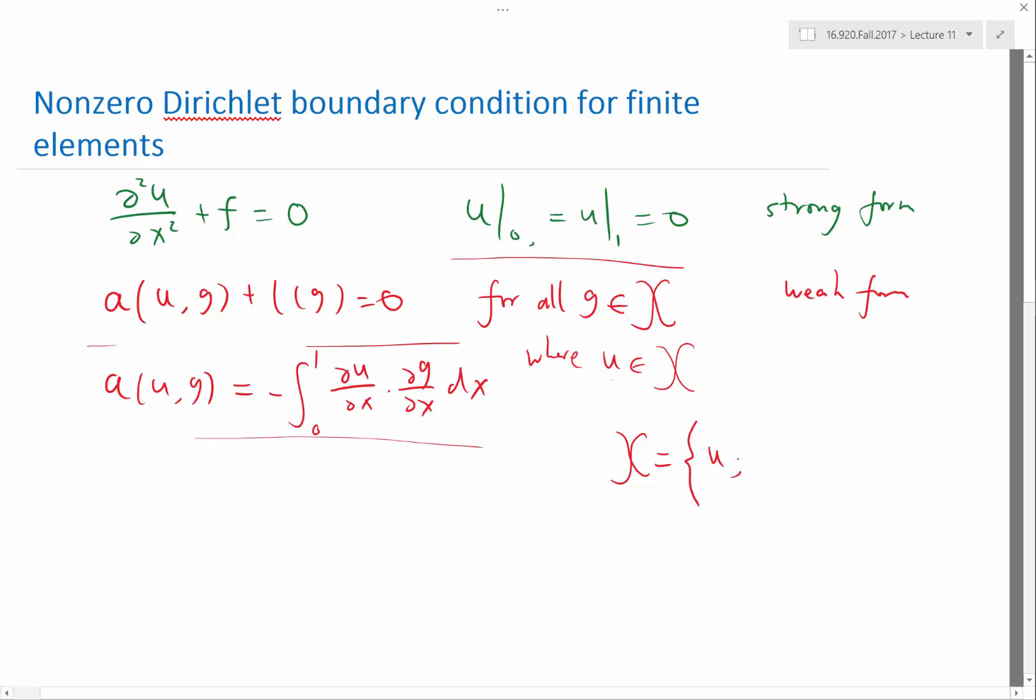The boundary condition is involved in this space X, because X is going to be defined as all the functions u such that u is in H¹. That is the Sobolev space we talked about last lecture, which means that the square of u has to be integrable within the domain, and the square of the derivatives of u has to be integrable in the domain. In multiple dimensions, it means that the square of any partial derivative of u has to be integrable in the domain.